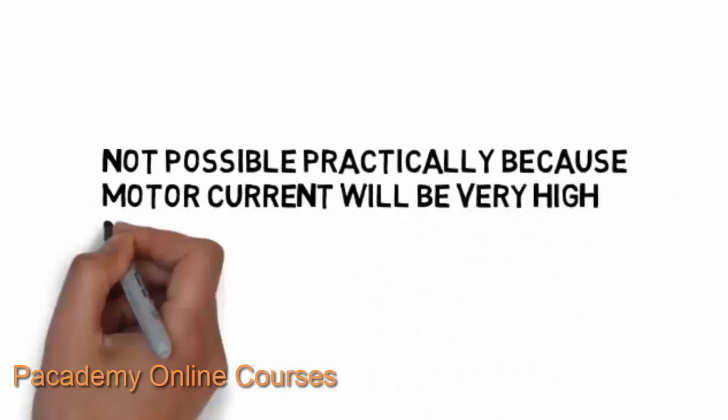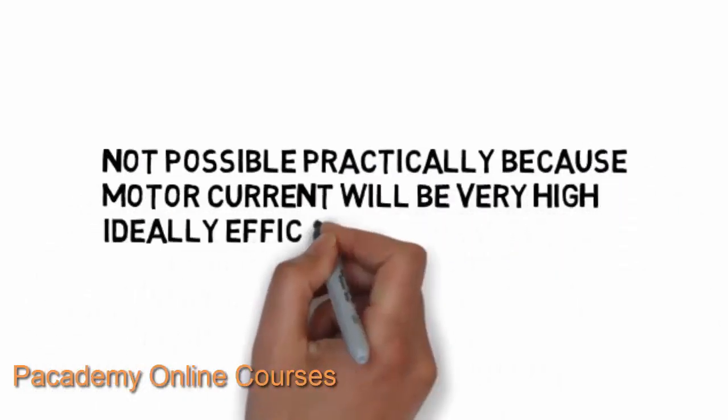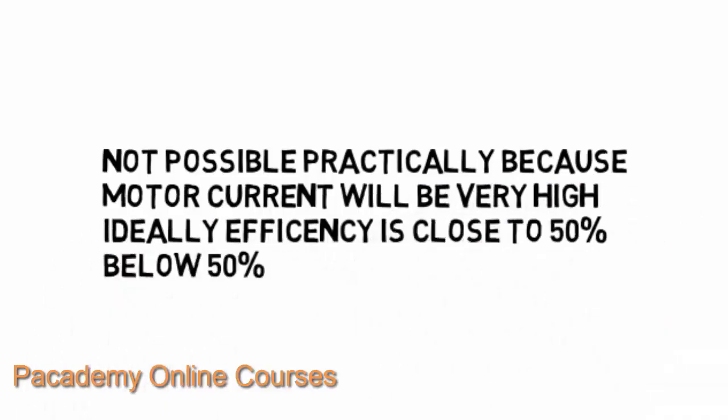In ideal conditions this is not achievable, because when the back EMF becomes equal to half of the supply voltage, the motor current will be very high. Therefore the ideal efficiency of a motor is close to 50%, or is always below 50%.